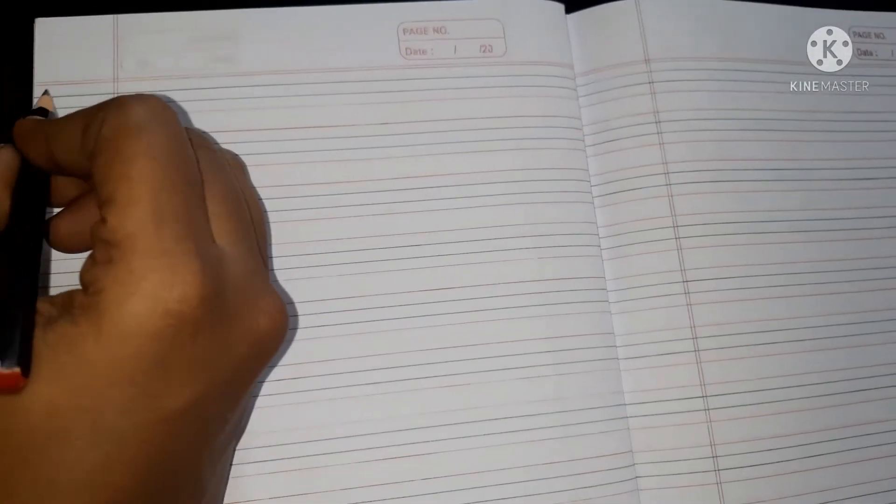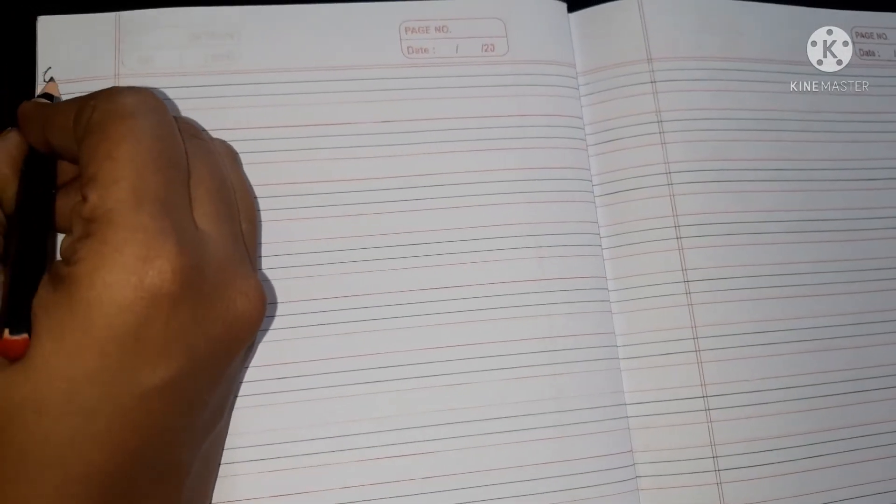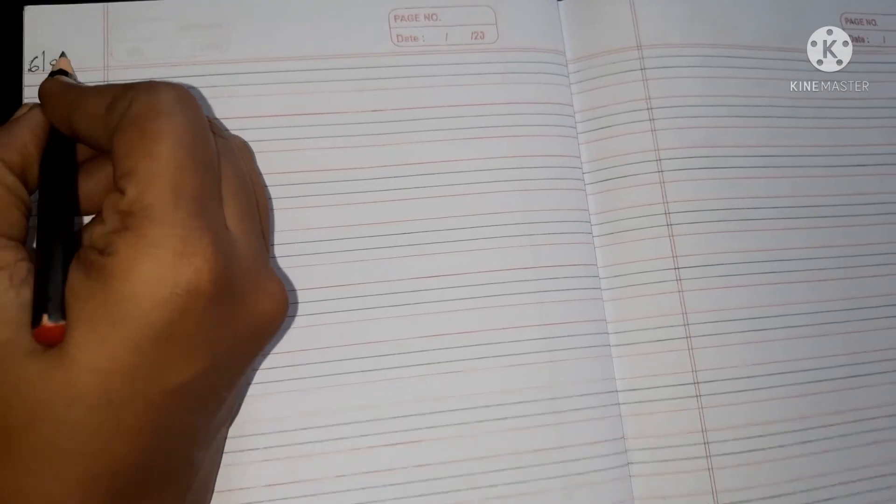This is your small task children who will write very neatly. They will get a nice certificate. Okay. So write today's day children. 6-8-21.